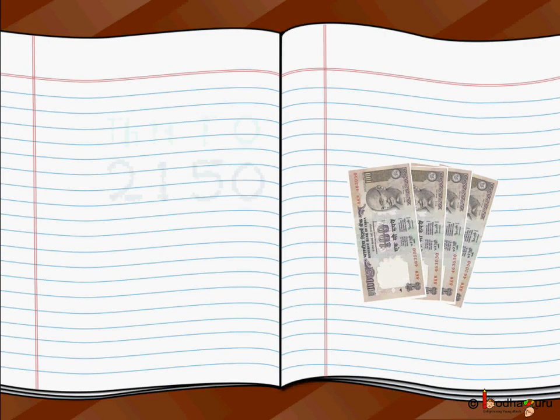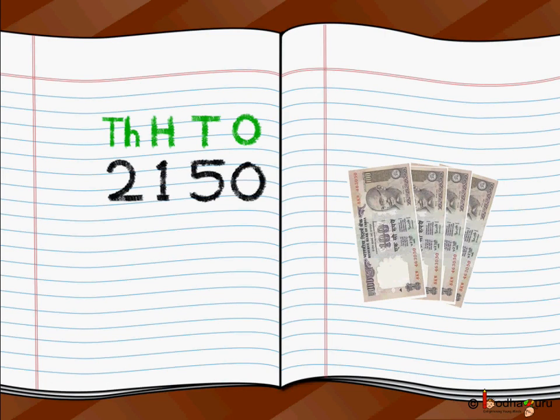So we write 2150: 0 at the 1's place, 5 at the 10's place, 1 at the 100's place, and 2 at the 1000's place. And then we add 1150 to it.